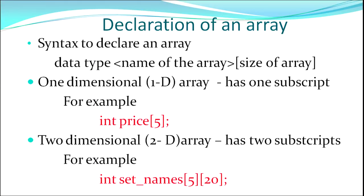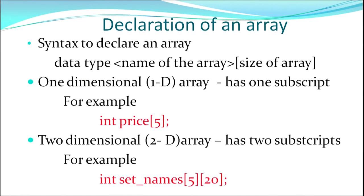Now, how to declare an array — how to tell the compiler that you want to create an array. The syntax to declare an array starts with the data type. Since an array is a set of elements of similar data type, the data type must be mentioned. It can be integer, character, float, double, long int — any of the data types you have learned. Then we specify the name of the array, and then the size of the array.